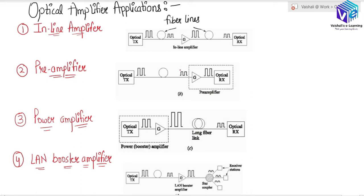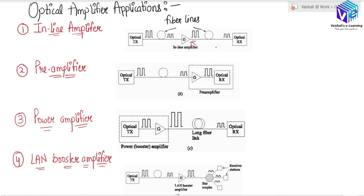Optical amplifiers can be used in various configurations. First, we have the inline amplifier, which is used to compensate for fiber dispersion losses and acts as a repeater. The inline amplifier is placed in between the transmitter and the receiver, providing amplification so that the distance between the optical transmitter and optical receiver can be enhanced for long-distance communication. It compensates for transmission loss and increases the distance between regenerative repeaters, and can even work in collaboration with repeaters.